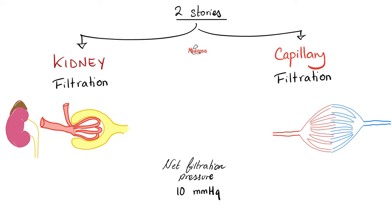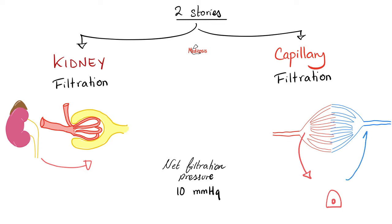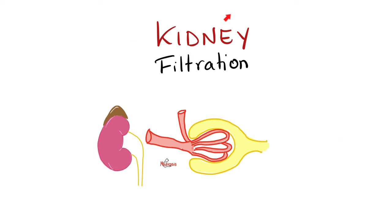Now I'll tell you two stories: the story of kidney filtration and the story of capillary filtration. Both of them have the same net filtration pressure — the end result is 10 millimeters of mercury. In the kidney, we're trying to get blood from the arterioles into the tubules. At the arterial side of a capillary, you want blood to go out to the cell — net filtration pressure positive 10. At the venous side, you want negative 10 so blood goes back to venules, veins, and the right atrium.